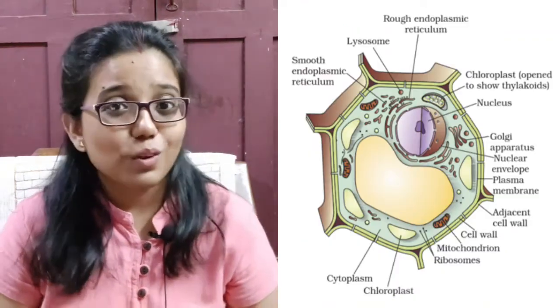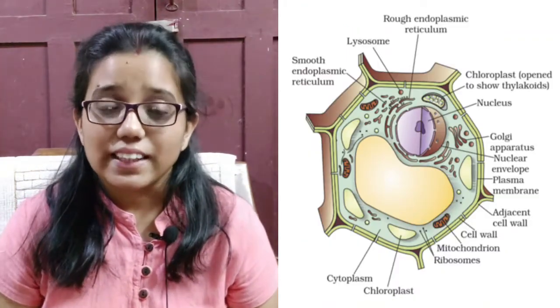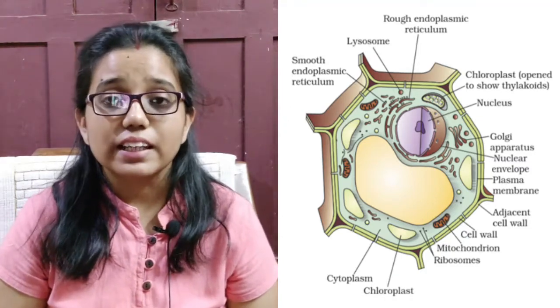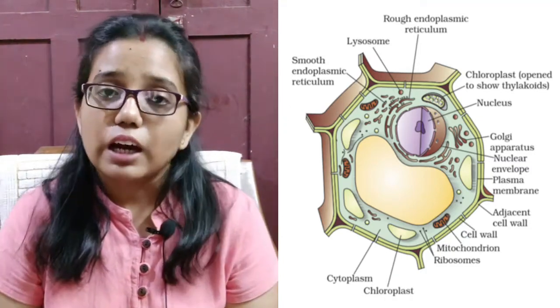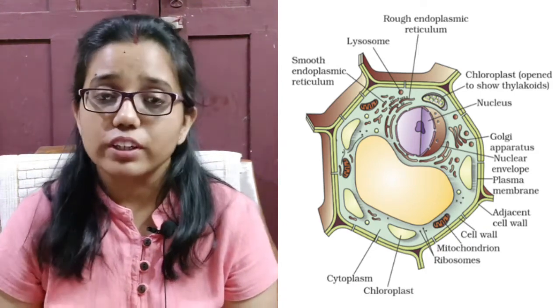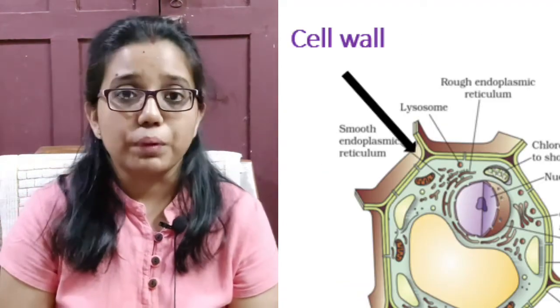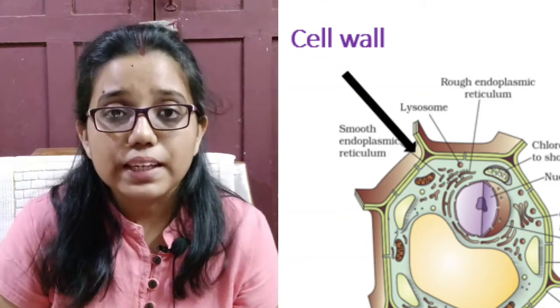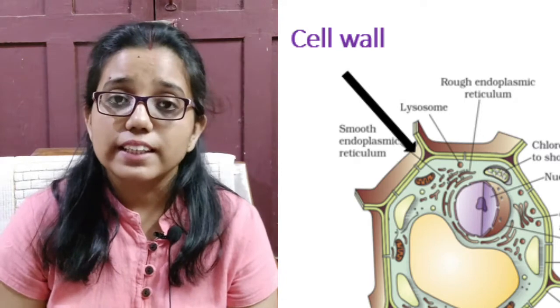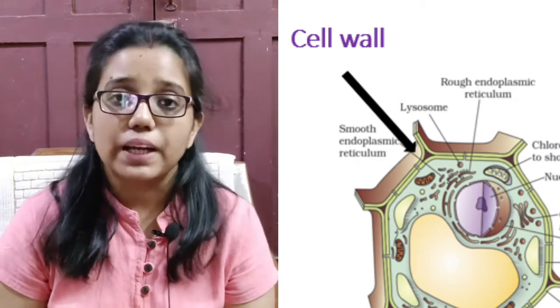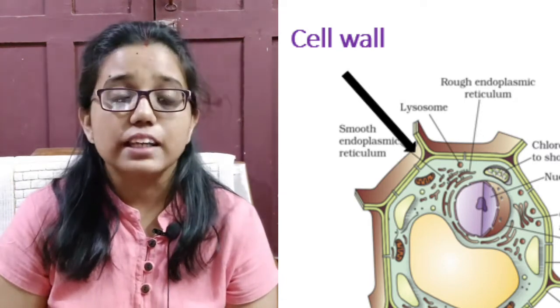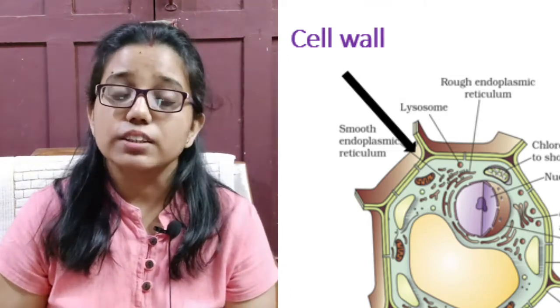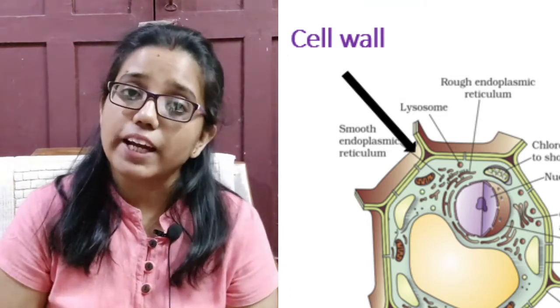Do you know viruses do not have cell membranes? And that's why they do not show any characteristics of life until they enter a living body. Now, in plant cells, there is another rigid outer covering other than the cell membrane and it is called cell wall. It is mainly composed of cellulose that gives structural strength to the plant.